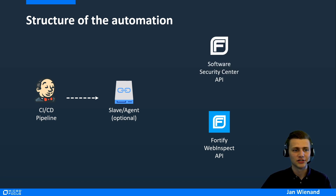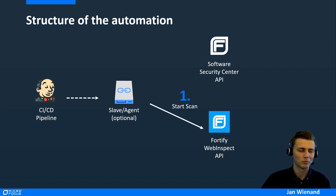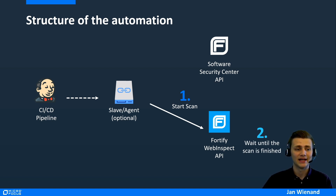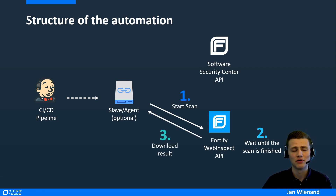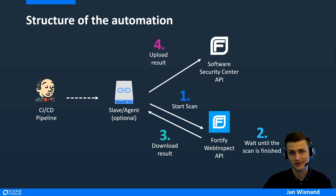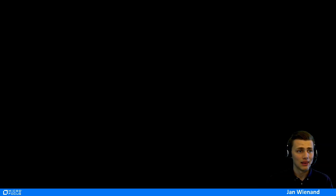Let me show you the different steps in the structure. The CI/CD server or slave/agent starts the scan, waits for a status change on the WebInspect API, and downloads the results locally. After that, we upload the results from the slave or agent to the Software Security Center.